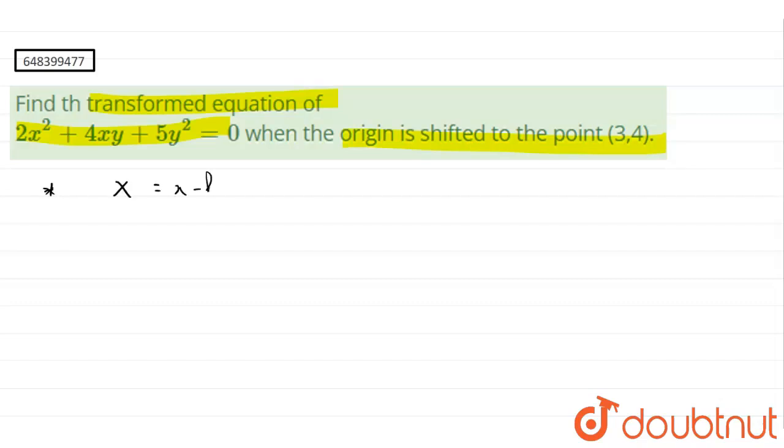So the formula is capital X equals small x minus h and capital Y equals small y minus k. Now capital X comma capital Y, they are the new coordinates. Small x comma small y, they are the old coordinates. And h comma k, that is our new origin.